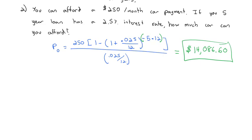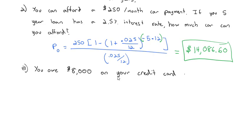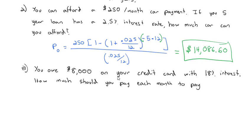That $14,086.60 gives you a $250 per month car payment for five years. The other question with loans is: if you owe a certain amount, how much do you have to pay to pay it off? Let's say you owe $8,000 on your credit card with an 18 percent interest rate. How much should you pay each month to pay it off in three years?